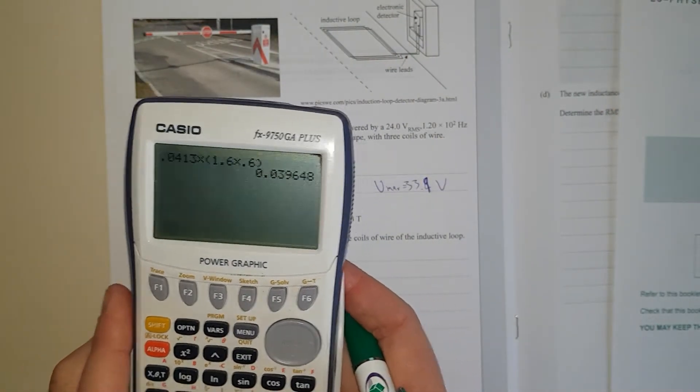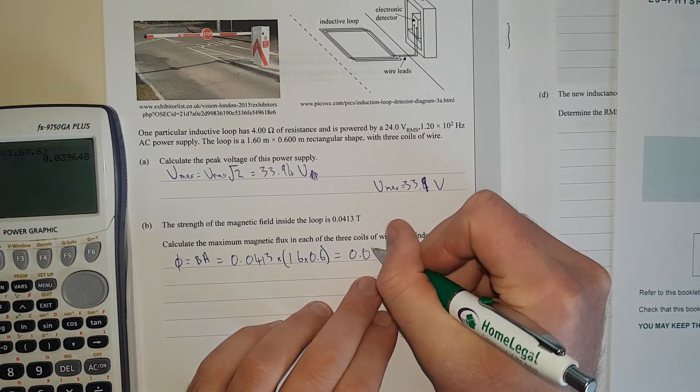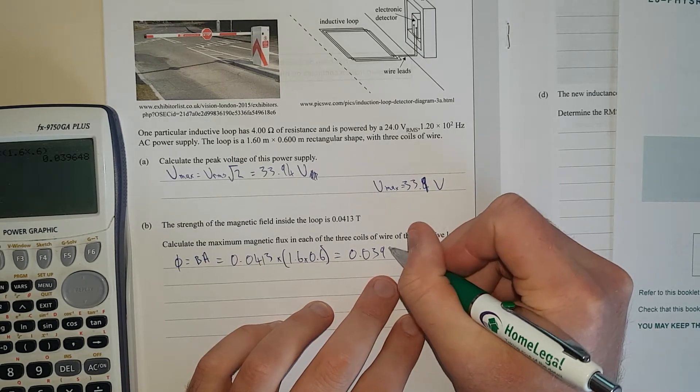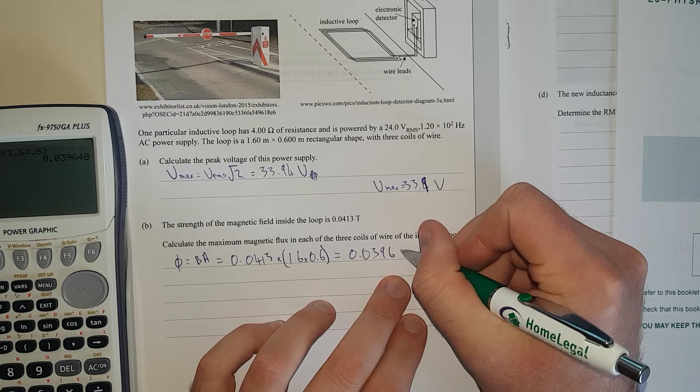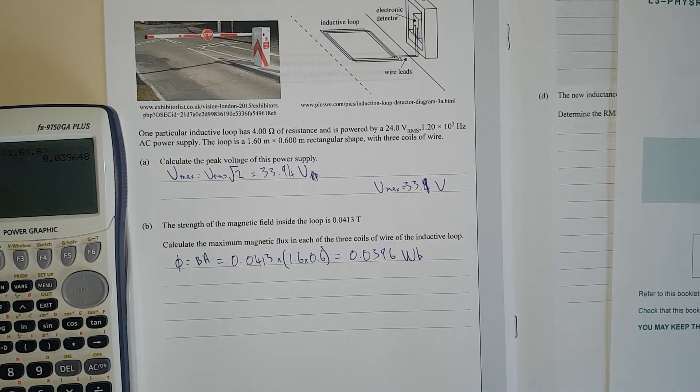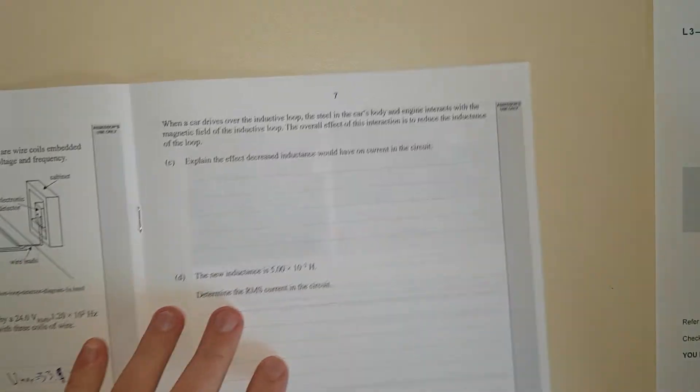So it's 1.6 times 0.6, which equals 0.0396. That's right, 0.0396. The units for these are Webers, which is a really uncommon unit. Tesla's pretty common, you've probably heard of the car company Tesla, but Webers is a very unique unit.